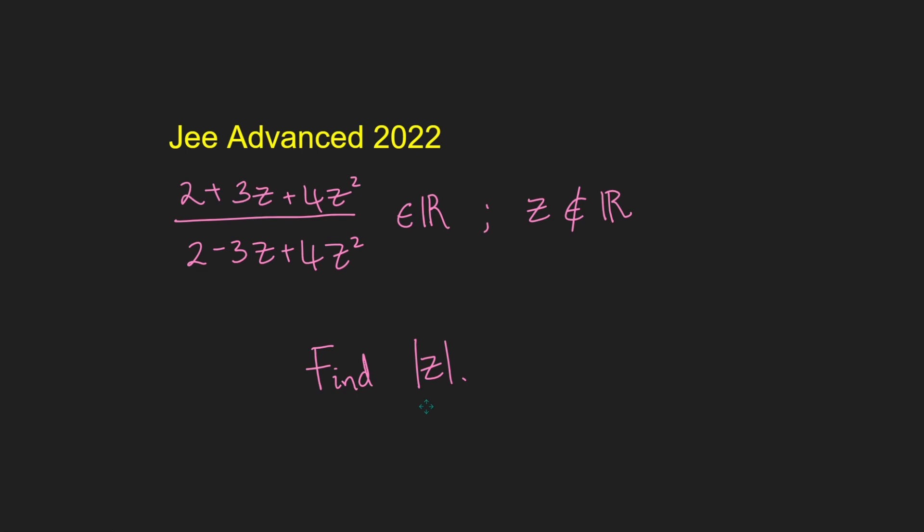2 plus 3z plus 4z squared divided by 2 minus 3z plus 4z squared is some real number, except z is not real. And from this information alone, we want to find the magnitude of z. So all we're told is that z is not a real number, and that this number here is a real number, and from that we're supposed to deduce the magnitude of z.